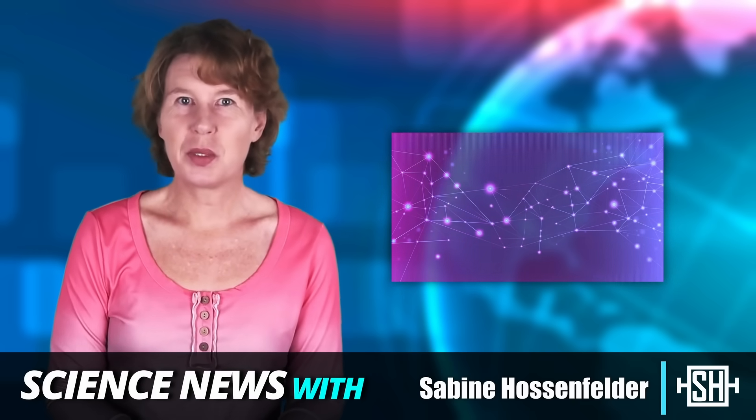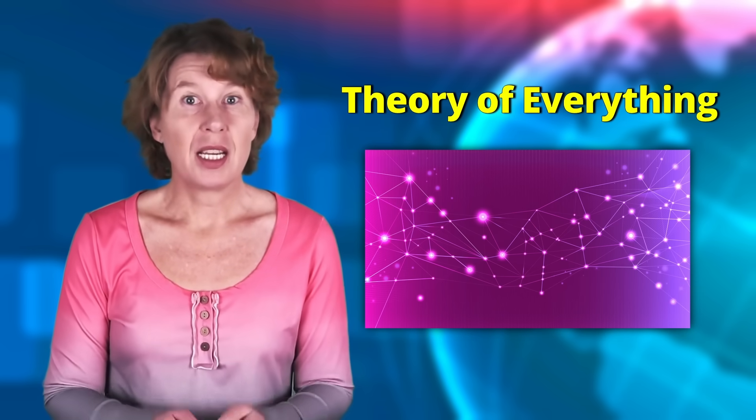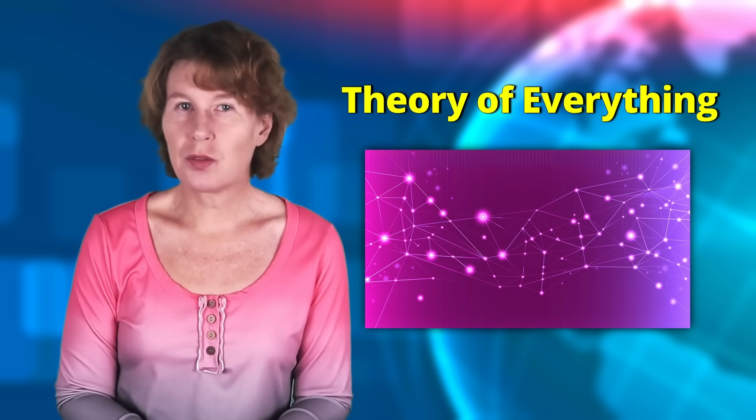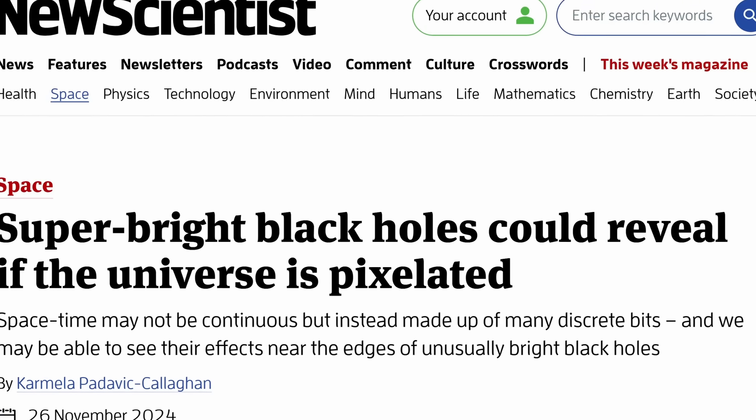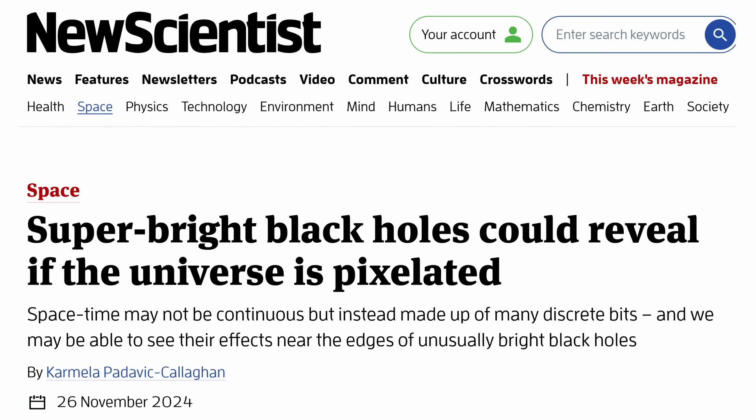A month ago, I told you about Stephen Wolfram's attempt to develop a theory of everything based on hypergraphs. And just the other day, I learned from New Scientist that if he's right, it'd imply a characteristic change in the emission of supermassive black holes that could be observable. That'd be very interesting, if true. So let's have a look.